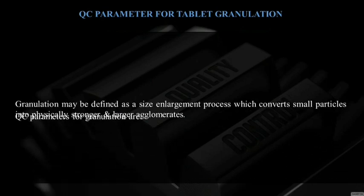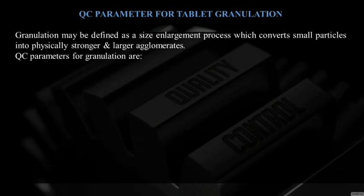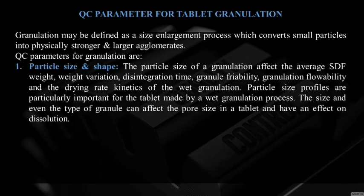Quality control parameters for tablet granulation — granulation may be defined as a size enlargement process which converts small particles into physically stronger and larger agglomerates. Granulation can be classified into two types: wet granulation, involving wet massing of the powder blend with granulating liquid, then wet sizing and drying; and dry granulation, where the powder mixture is compressed to form slugs, then sizing and compression. Quality control parameters for granulation include particle size and shape — particle size affects the average solid dosage form weight, weight variation, disintegration time, granule friability, and granulation flowability.